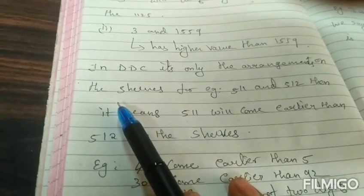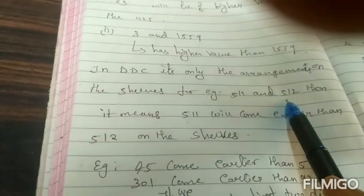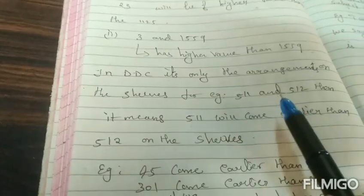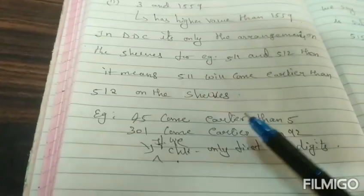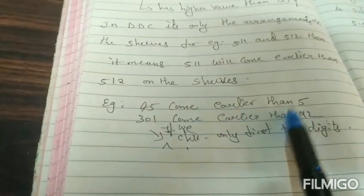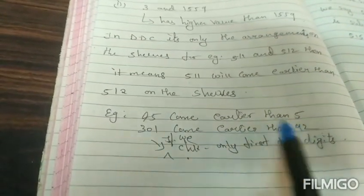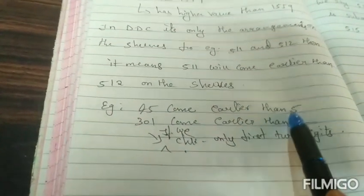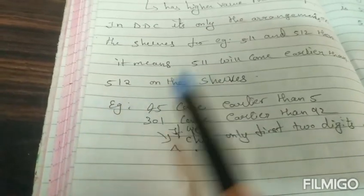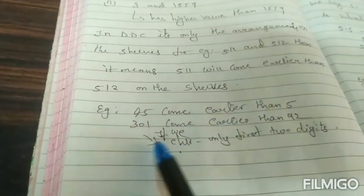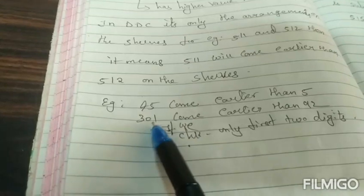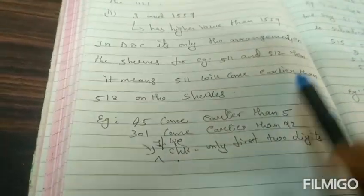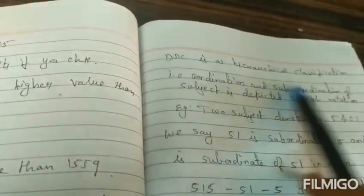So in the DDC, the arrangement on the shelf: for example, 511 and 512 are there, then 511 will come before 512. In that manner only we need to understand. If we take 45, then it comes earlier than 5 because 4, the first two digits we need to consider. So 45 will come before 5, and 3 also, 301 or something else, but the first two digits is 3, so 3 will come before 9 and 2 digits.